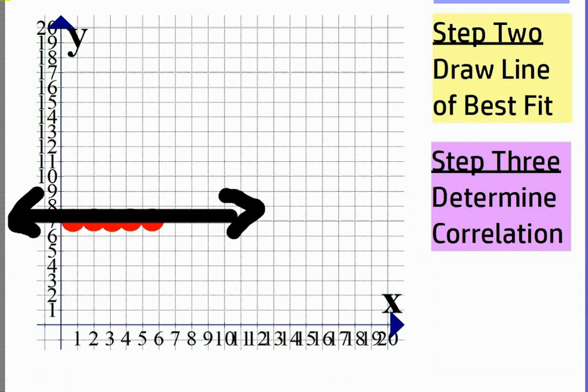There's no correlation. They don't have to scatter up and down. If it's horizontal, technically it's no correlation. So that means if X...